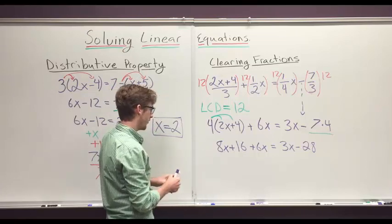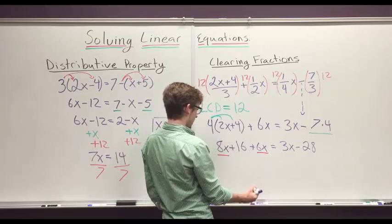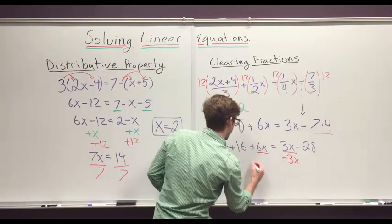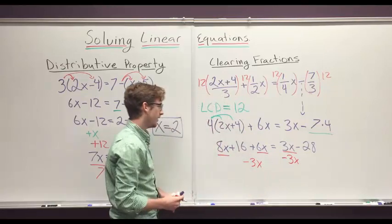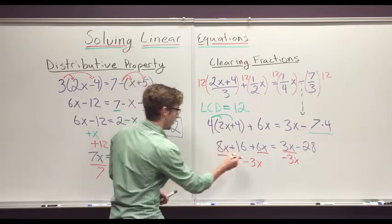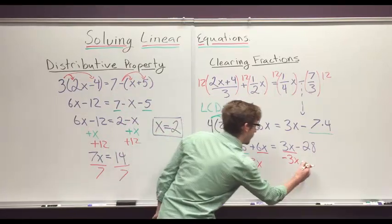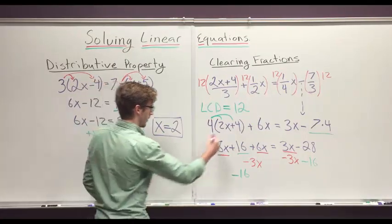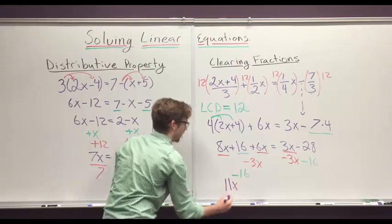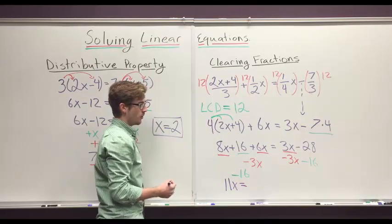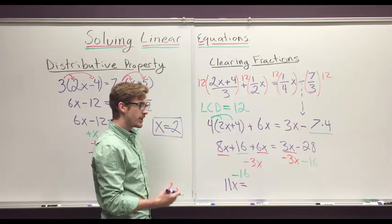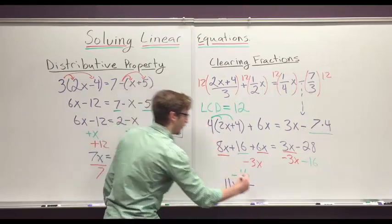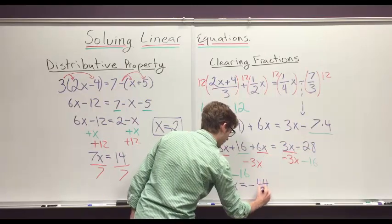Now we can combine like terms. We have an x here, an x here, an x here, and an x here. So we're going to want to subtract 3x from both sides, and we have a positive 16 there, so we're going to subtract 16 from both sides. And when we do that, we get 11x equals, well what's negative 28 minus 16? Well that's really 28 plus 16 but with a negative, so that's really going to be negative 44. Which means that x equals negative 4.